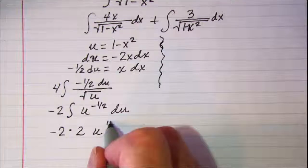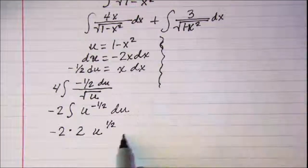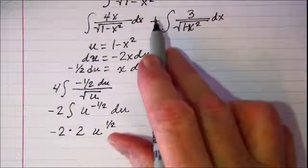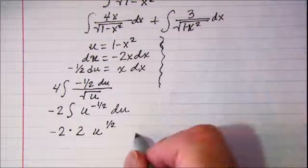So u to the positive 1 half, and I'll save my plus a constant here. I do have plus from here.